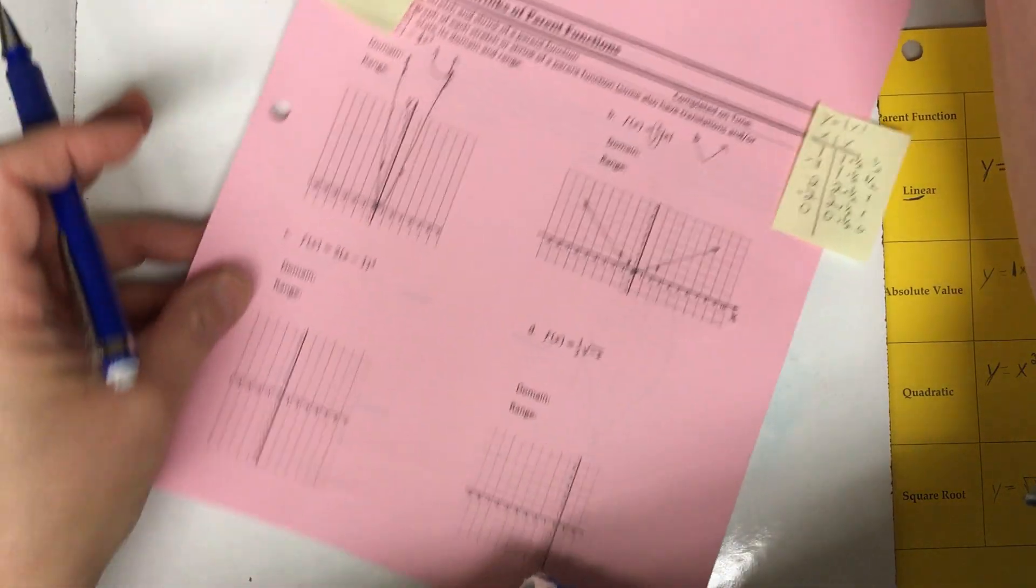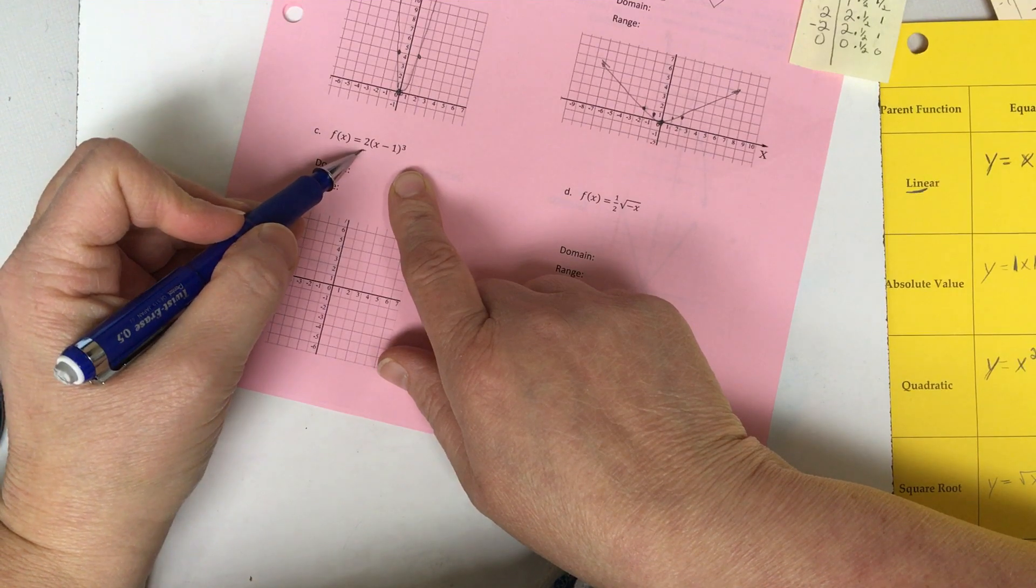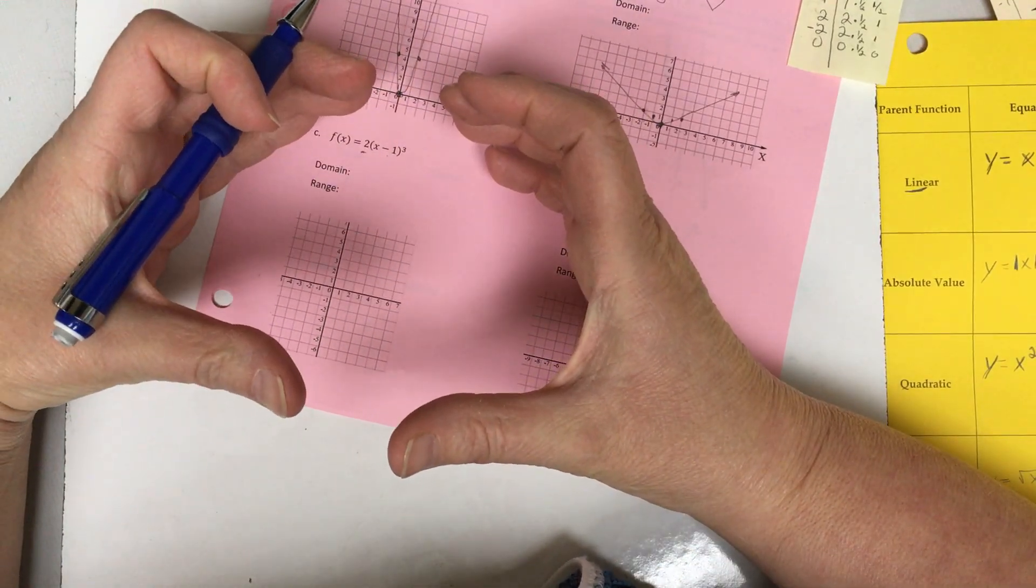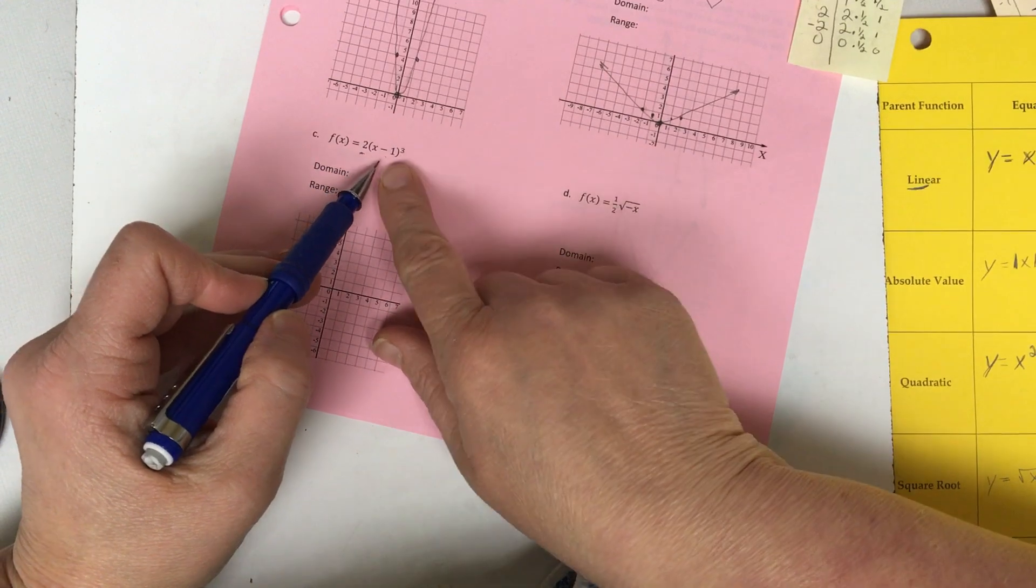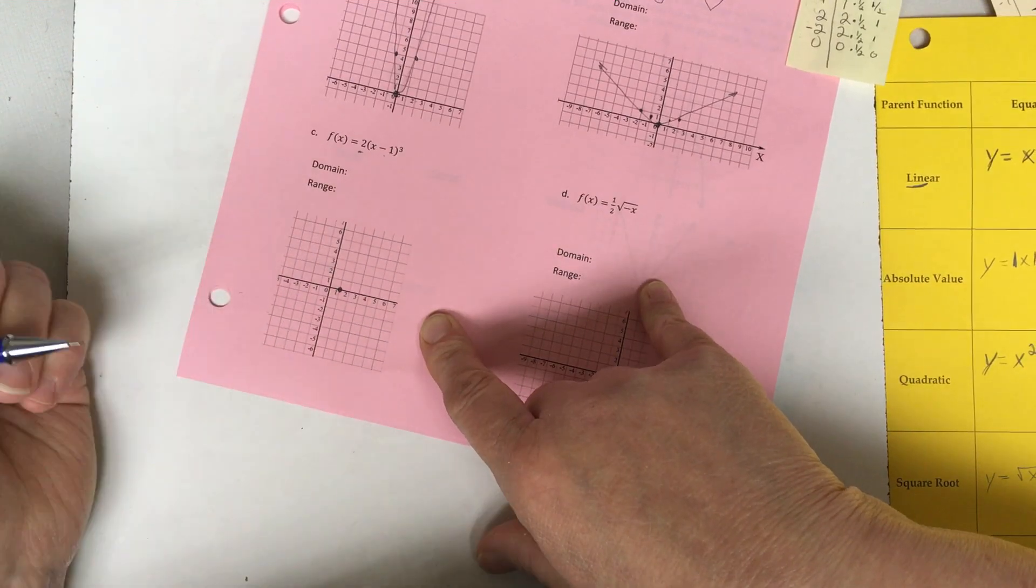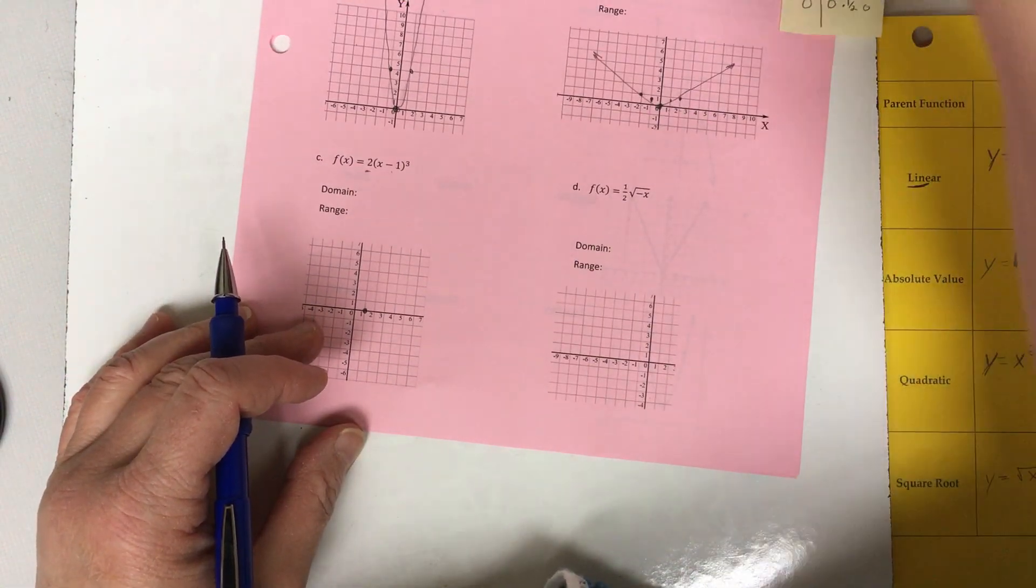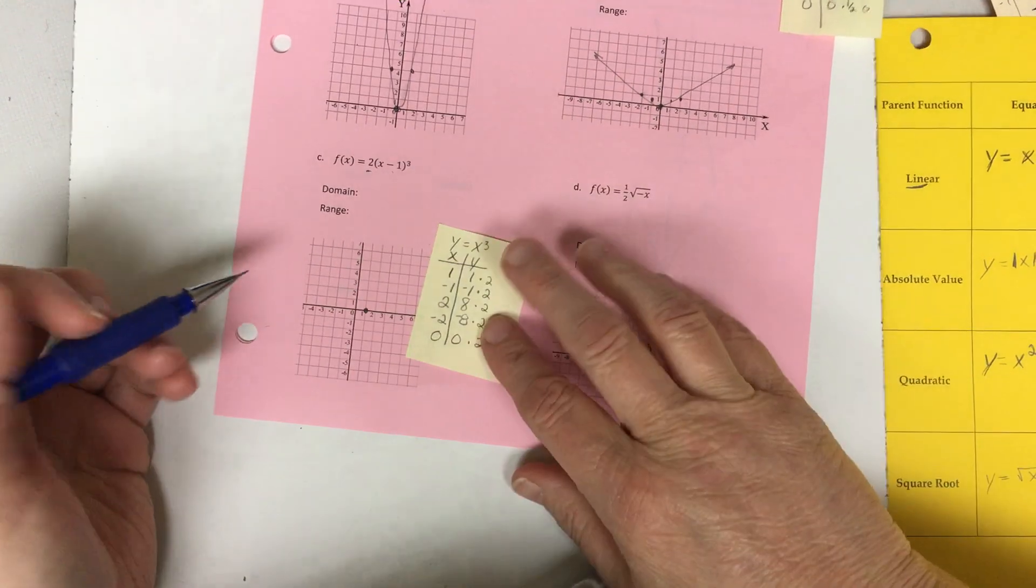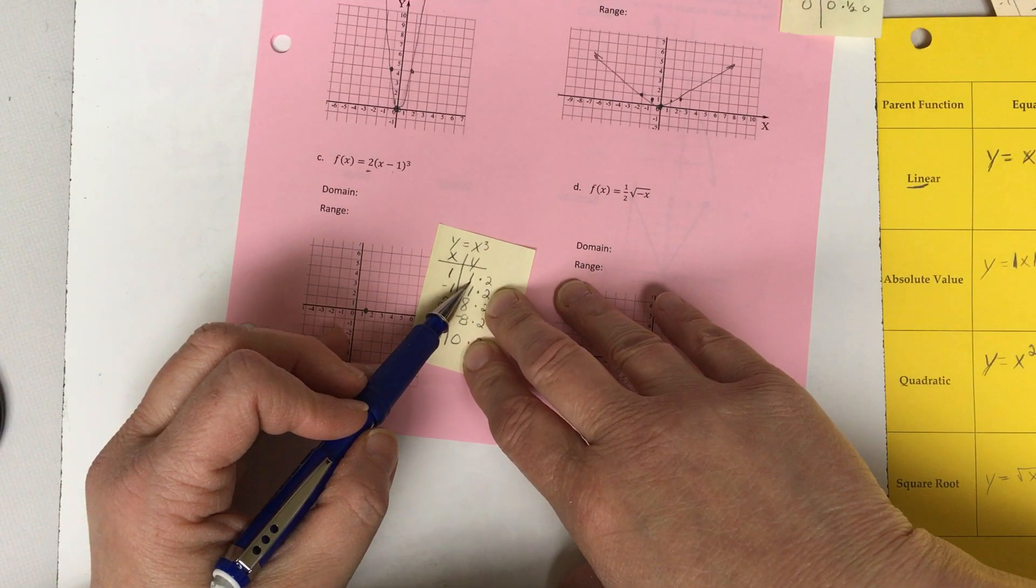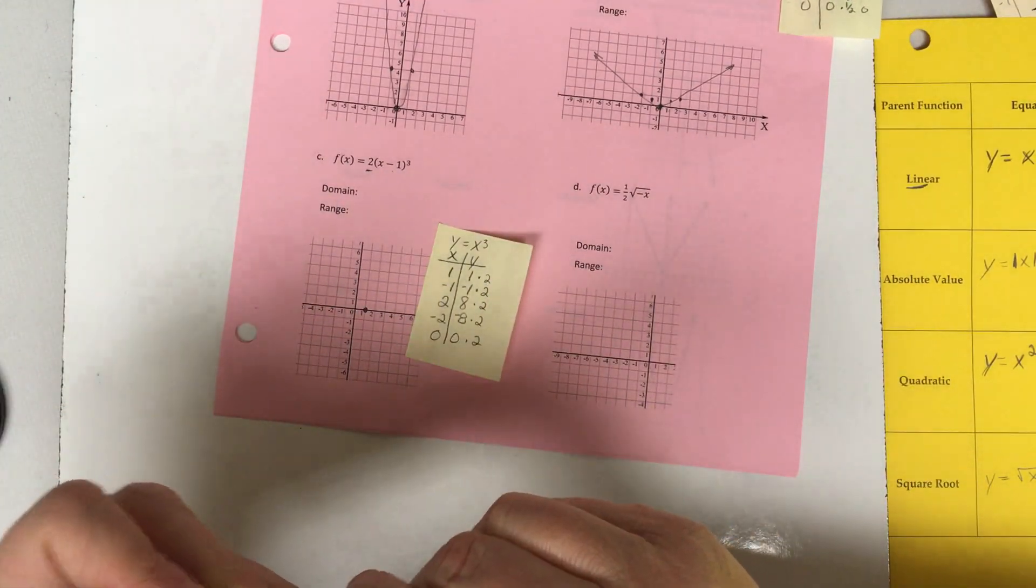All right our next function is our cubed function. Now we have some things going on. We have a stretch or shrink factor. In this case we're gonna stretch it because we're multiplying by two. But we also have a shift. So if you remember the shift inside the parentheses means it's going left or right. So I know that this is a negative so the opposite would mean it was going this direction. So I'm gonna start here. This is where my vertex is. All right and then I put some pieces on a t-chart already. So if I'm going over one I would normally go up one. One times one times one is one. But now I'm going up two because I have a stretch on this.